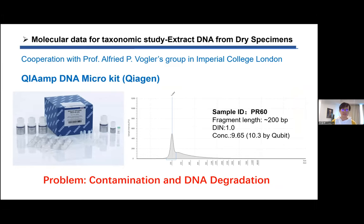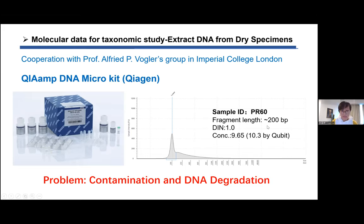The third part is about the molecular work. Molecular data is getting more and more important in taxonomic study, and we all hope to get more data from specimens. But sometimes we can't get fresh ones, so we try to extract DNA from dry specimens. Contamination and degradation of dry specimens make this difficult. From TapeStation results, the average fragment length of dry specimen samples is only about 200 bp — very short, making PCR or sequencing not easy.